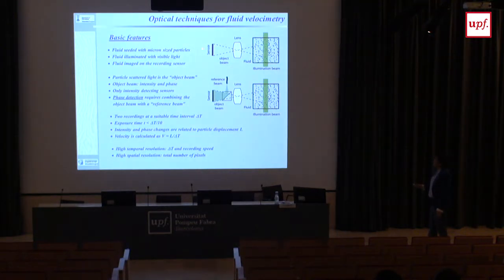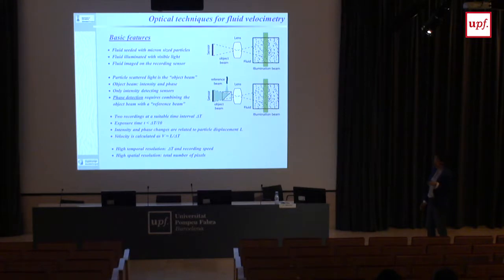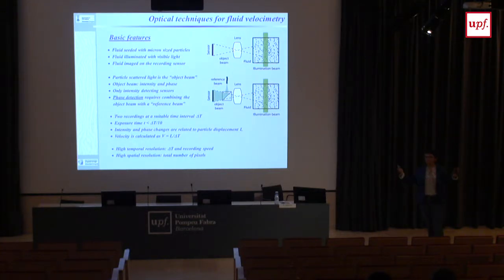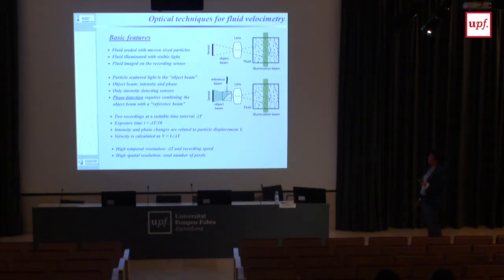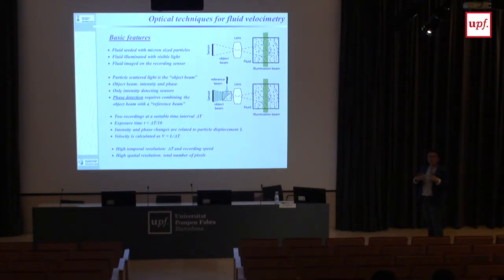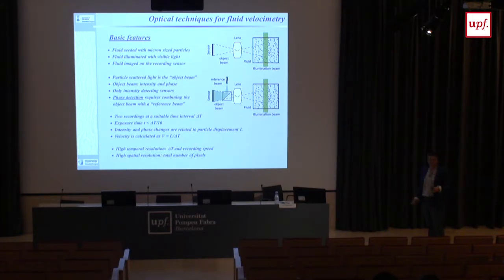The light that reaches the sensor — the object beam — carries information not only on intensity but also on phase. The phase of the wave is related to the path the light has traveled: longer path means larger phase. However, no sensor can record phase directly — they only record intensity. To record phase, we mix the object beam with a reference beam from the same source. The phase differences between points are converted into intensity differences — this is called interferometry, where intensity is directly related to the phase difference.